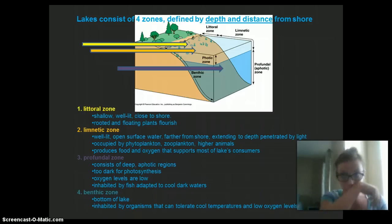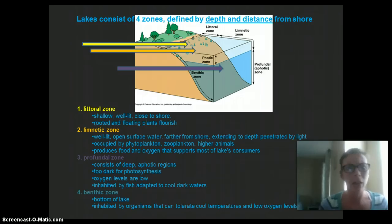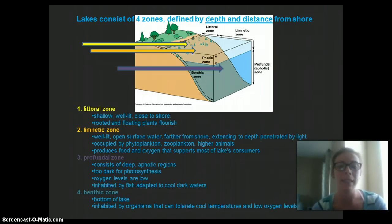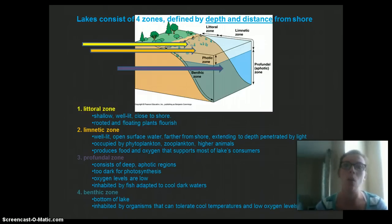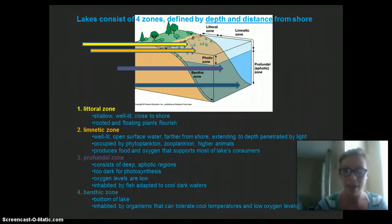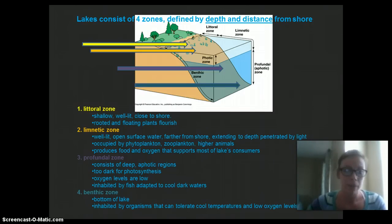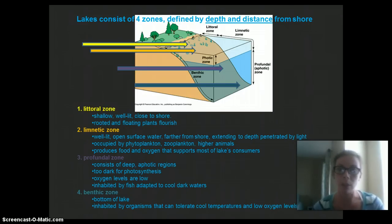Then we have the profundal zone, also called the aphotic zone, because there is not much or no light. It consists of the deeper regions where it's too dark for photosynthesis. Oxygen levels are low and it's inhabited by fish adapted to the darker, cooler waters. Our last zone is the benthic zone — the bottom of the lake — inhabited by organisms that can tolerate cool temperatures, low oxygen levels, and no light.